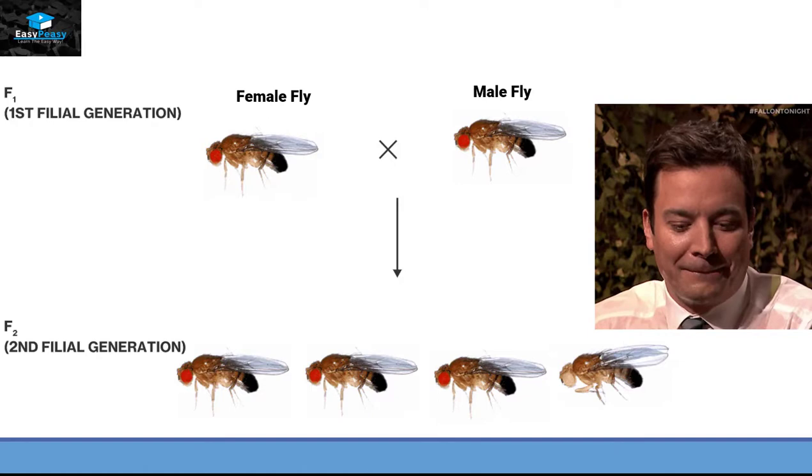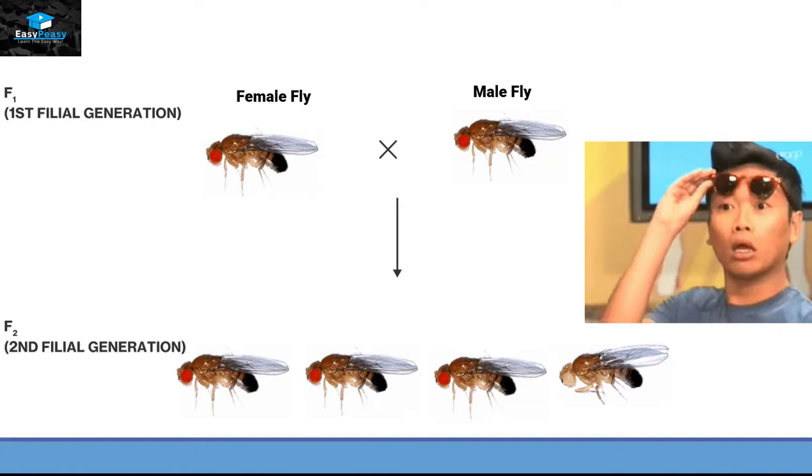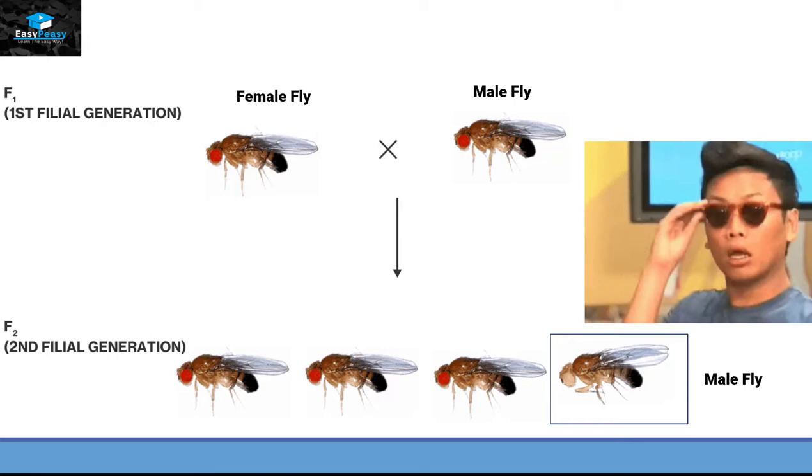At this point, Morgan felt embarrassed about his overreaction of not accepting Mendel's hypothesis. But he observed one thing unusual and that is that this white-eyed fly was a male fly.